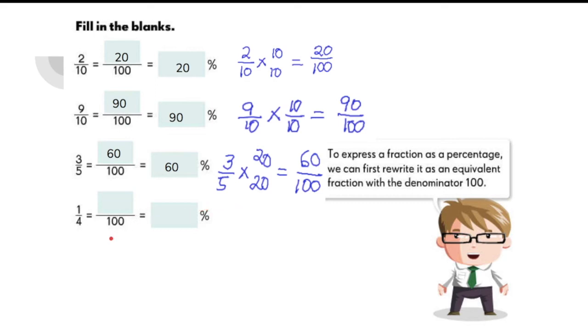And for the last item, 1 fourth, to be expressed into a fraction with a denominator of 100, you just need to multiply the fraction by 25 and 25. So 1 times 25 is 25, 4 times 25 is 100. So the fraction form is 25 over 100, and the final answer in percent would be 25%.